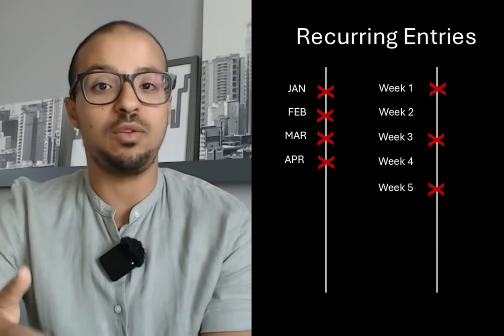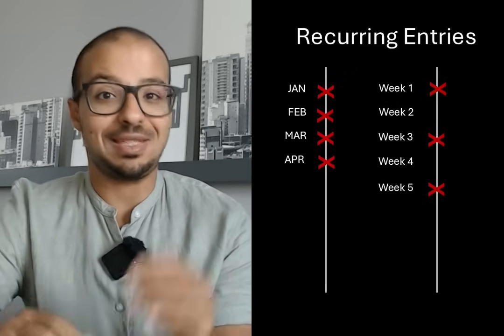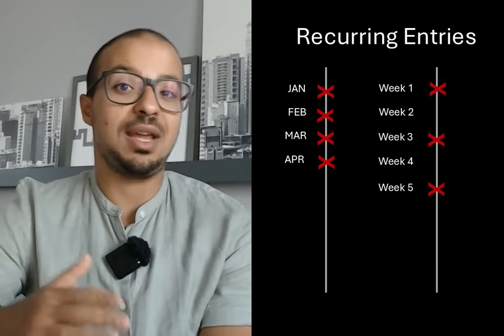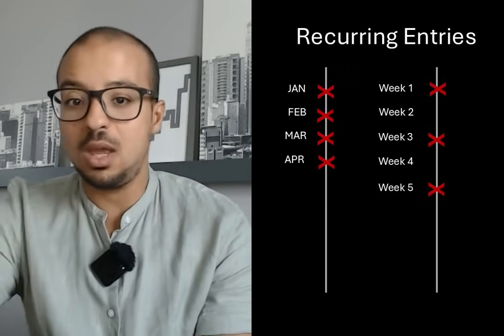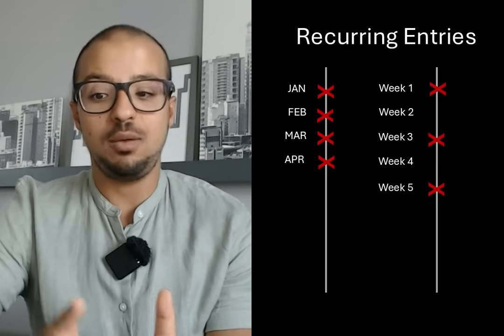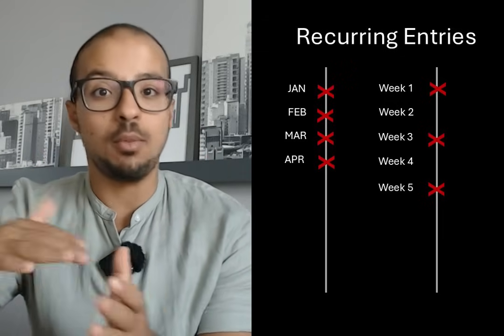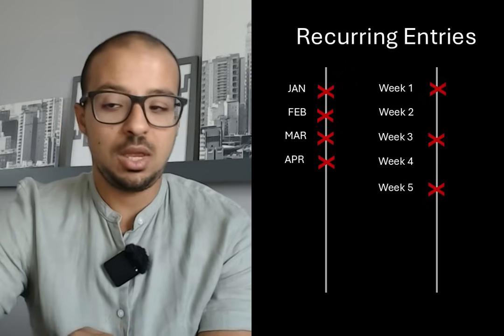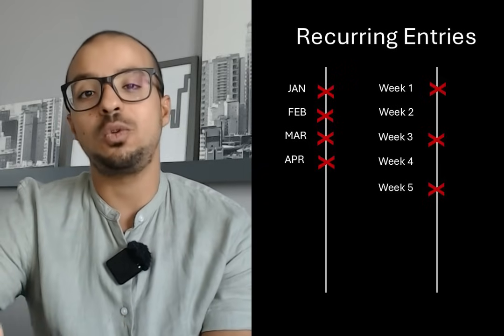Welcome to another video in the period-end closing playlist. We always have some accounting entries that we need to post more than one time — the accounting entry has the same values and the same inputs, but for example we need to post it at the end of every month during the year, or maybe on a certain day like the 10th or 15th. Maybe it is an entry we need to post every week. These entries are called recurring entries, and in SAP there are many tools that can help us.